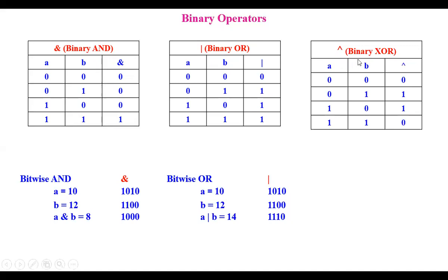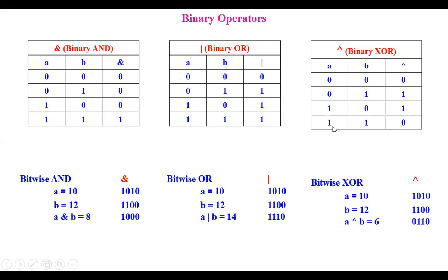Next, exclusive OR (XOR). The truth table: when both bits are 0, result is 0; when they differ (0 and 1 or 1 and 0), result is 1; when both are 1, result is 0. With A equals 10 (1010) and B equals 12 (1100): 1^1=0, 0^1=1, 1^0=1, 0^0=0 — giving binary 0110, which is 2 plus 4 equals 6. So exclusive OR of A and B gives 6.